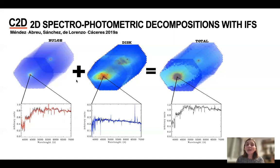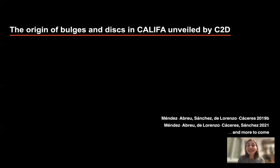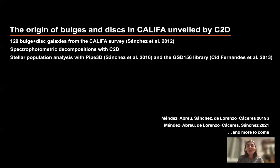C2D is now able to decompose bulge and disk galaxies, but also barred galaxies. But today I'm going to show you the results from a project entitled 'The Origin of Bulges and Disks in the CALIFA Survey.' We have taken a sample of 129 bulge and disk galaxies — not barred galaxies in this case — and we have run them through C2D.